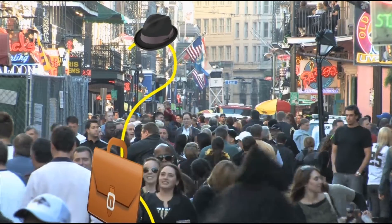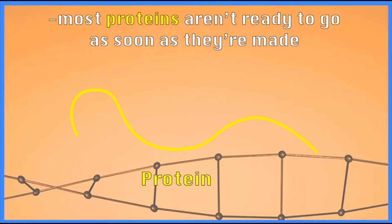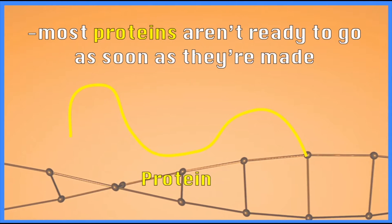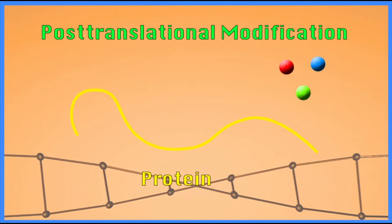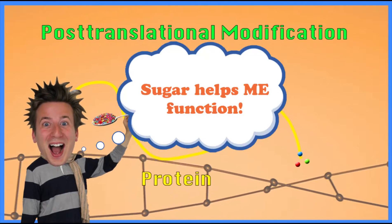Now the protein's been released and gone off to find its way in the world. After translation, what then happens? Most proteins aren't quite ready to go right when they're made. One thing that happens is they sometimes get post-translationally modified — they get molecules added onto them, whether sugars or other small molecules that help them function. The other thing that happens is they have to fold into their shape.